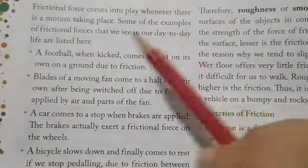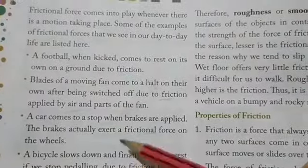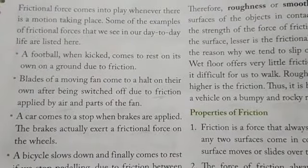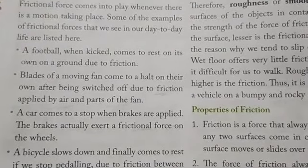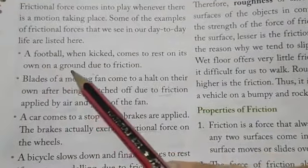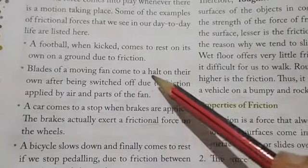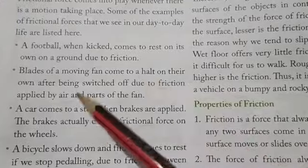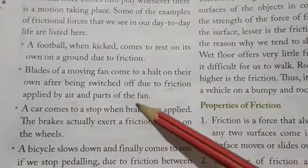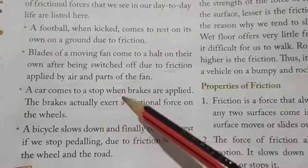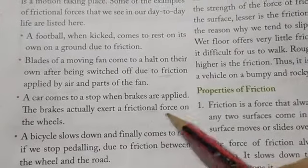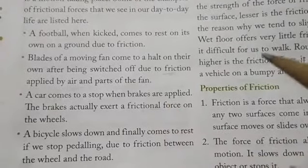Here are some daily life examples of frictional forces. A football when kicked comes to rest on its own on the ground due to friction — it moves a certain distance, gradually slows down, and finally stops because of friction between the football surface and the ground. The blades of a moving fan come to a halt after being switched off, due to friction applied by the air and the parts of the fan. Similarly, a car comes to a stop when brakes are applied, because the brakes exert a frictional force on the wheels.